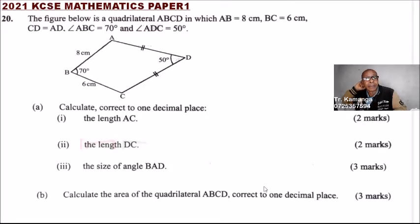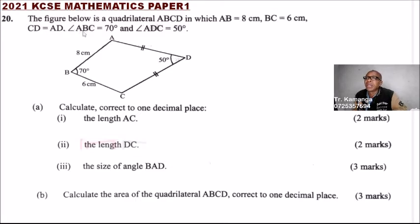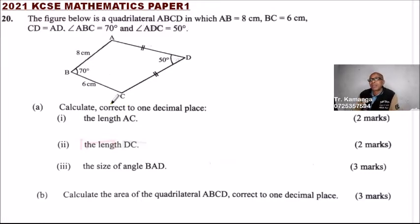This is question number 20. The figure below is a quadrilateral ABCD where AB is 8, BC is 6, CD equals AD, angle ABC is 70 degrees, and angle ADC is 50 degrees. So this is a quadrilateral that looks like a kite, but the difference is that this side is not equal to that.